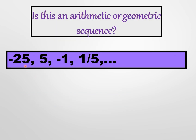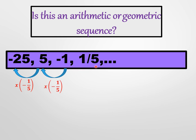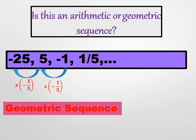Another example: negative 25, 5, negative 1, one-fifth, and so on. The sequence is decreasing quickly, so let's check if it's geometric. 5 divided by negative 25 equals negative one-fifth; negative 1 divided by 5 also equals negative one-fifth; and one-fifth divided by negative 1 is also negative one-fifth. Since we have a common ratio of negative one-fifth, this is a geometric sequence.